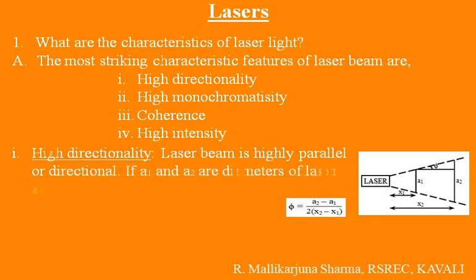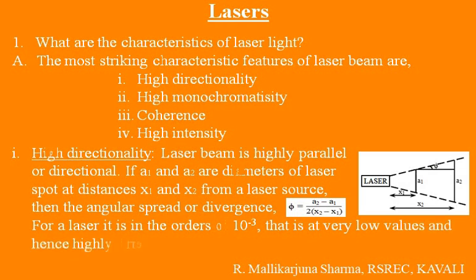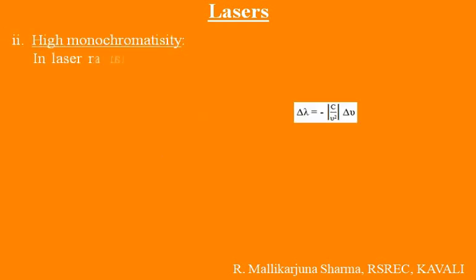First point: High directionality. A laser beam is highly parallel or directional. If A1 and A2 are the diameters of the laser spot at distances X1 and X2 from the laser source, then the angular spread or divergence θ is equal to (A2 minus A1) divided by 2 into (X2 minus X1). For laser light, it is in the order of 10 to the power minus 3 — very low values — and hence highly directional.